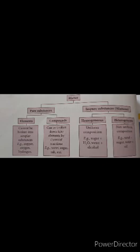From the point of chemistry, pure substances are those which contain only one kind of particle. For example, metals like gold and copper are said to be pure substances — those which contain only one kind of particle. Whereas impure substances are those which contain more than one kind of particle.